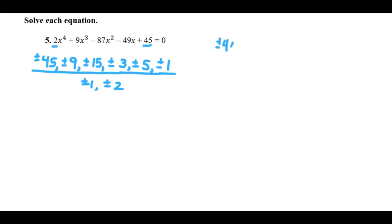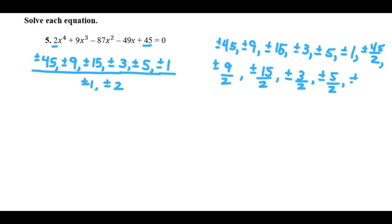So all in all, we've got plus or minus 45, plus or minus 9, plus or minus 15, plus or minus 3, plus or minus 5, plus or minus 1. And we also have those over 2. So plus or minus 45 halves, plus or minus 9 halves, plus or minus 15 halves, plus or minus 3 halves, plus or minus 5 halves, and plus or minus 1 half. All the possible numerators over all the possible denominators.